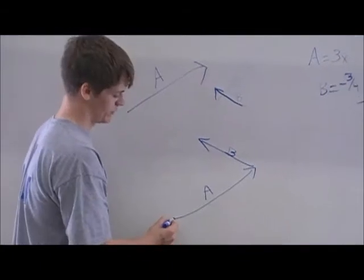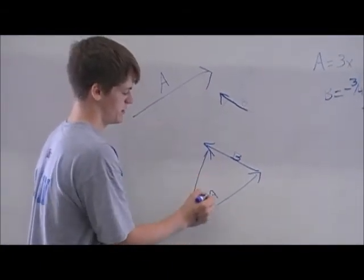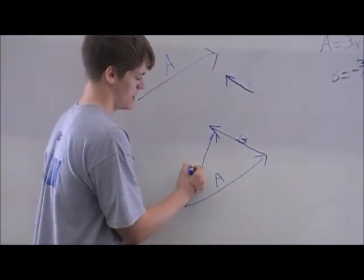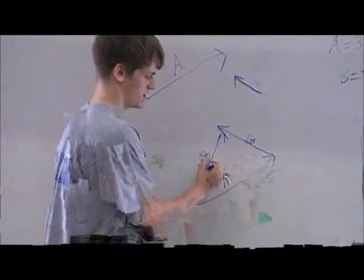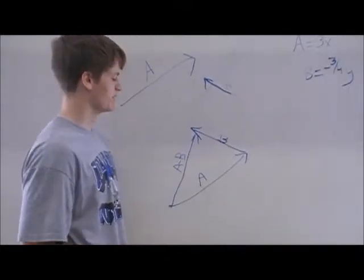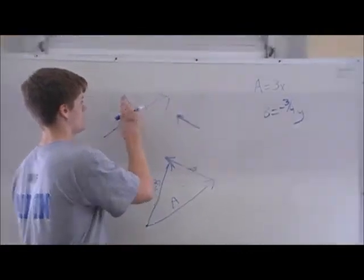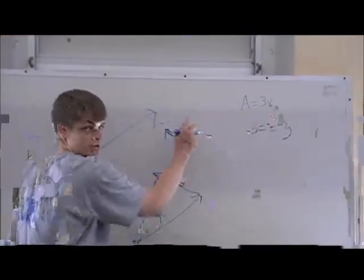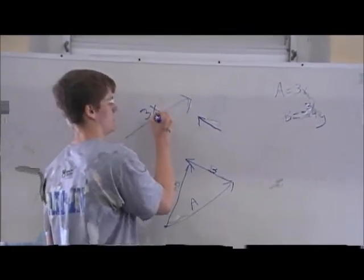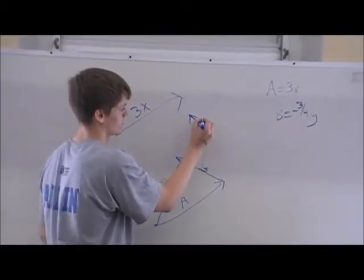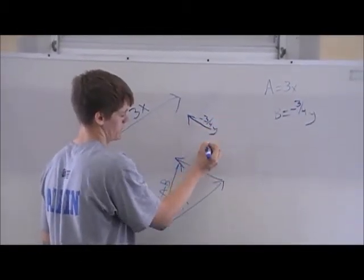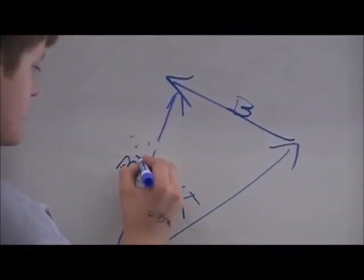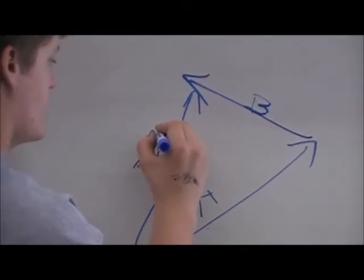Draw from your initial point A to the end of B and you have A minus B. You can substitute numbers into those and make A equal to 3x and B equal to negative 3, 4, y. So then A minus B is equal to 3x minus negative 3, 4, y.